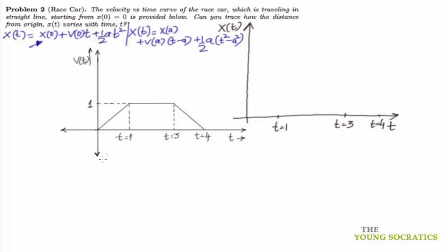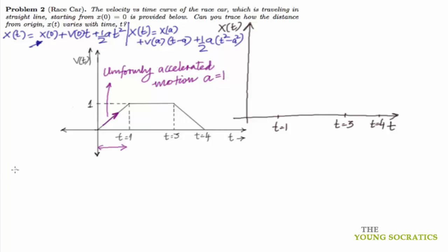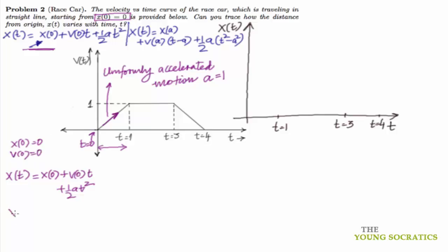Now consider the motion from t = 0 to t = 1 second. In this interval the v(t) versus t curve is a straight line, so this is uniformly accelerated motion. The uniform acceleration is given by the slope of this curve, which is 1. We use x(t) = x₀ + v₀·t + ½a·t². Here x₀ = 0 and v₀ = 0, so x(t) = t²/2, valid for t between 0 and 1.